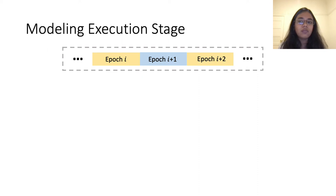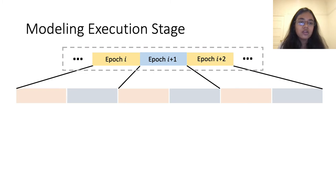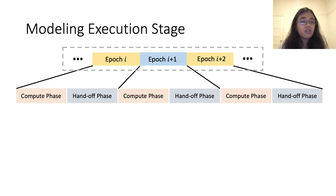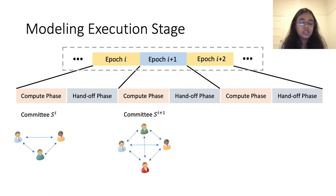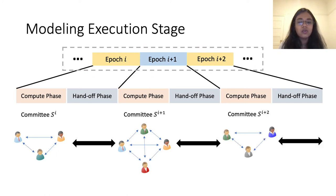The execution stage can be viewed as proceeding in discrete steps called epochs, where each epoch could potentially consist of many rounds. Each epoch is further divided into two main sub-phases: the computation phase and the handoff phase. Each epoch has a designated set of parties, which we refer to as the assigned committee for that epoch. The parties within the assigned committee interact with each other in the computation phase, and then in the handoff phase they interact with the parties in the next committee to share information about the computation done so far.